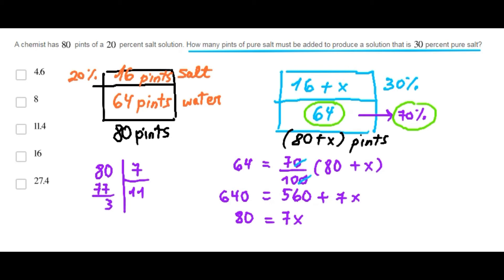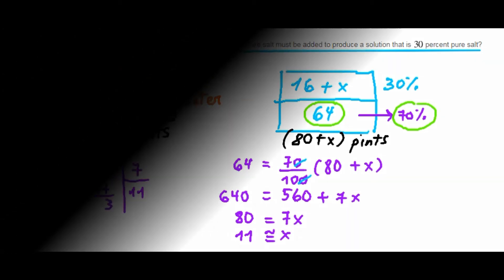The remainder is 3, so it's very close to 11. The value of x is very close to 11. So, the answer must be choice 11.4 pints.